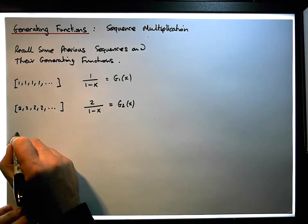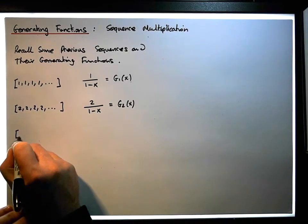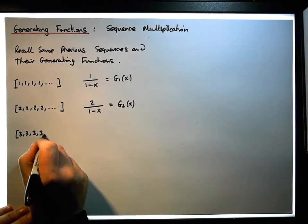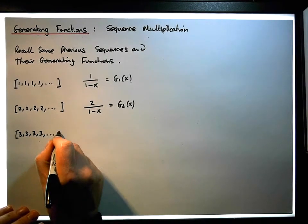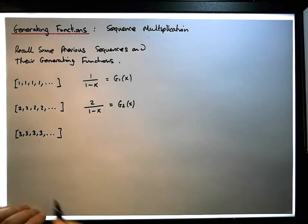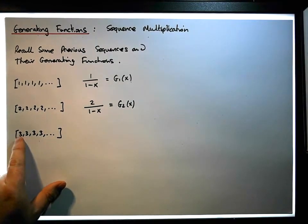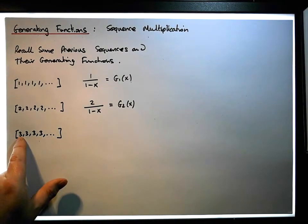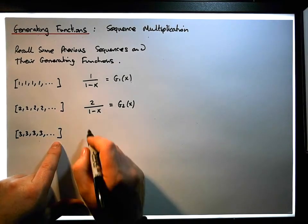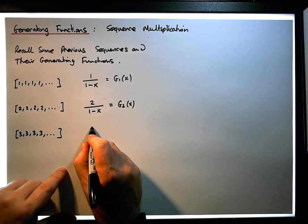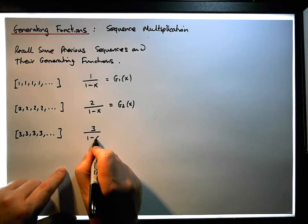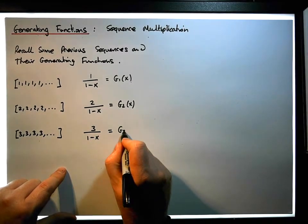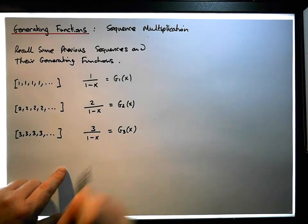We can continue — we have 3, 3, 3, 3, ..., the infinite sequence of constant term three, and that's simply equal to 3/(1 minus x), which we call g₃(x).